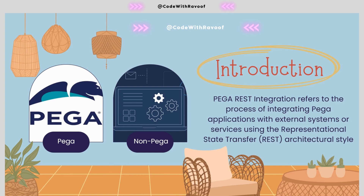Integration is nothing but connecting with other systems. Right now we are integrating Pega with non-Pega systems using REST. As we know, the abbreviation of REST is Representational State Transfer. With the help of Service REST, we are going to integrate with non-Pega systems. In this session we will only learn about the prerequisites before creation of the Service REST, and in the coming video I will post how to create the service package and what configurations need to be done.